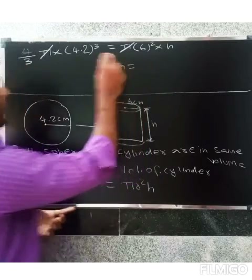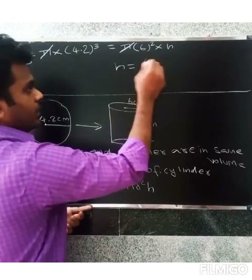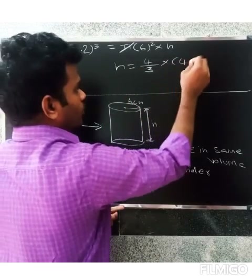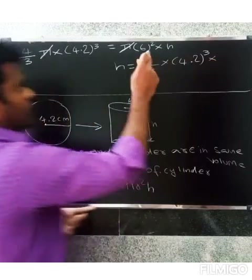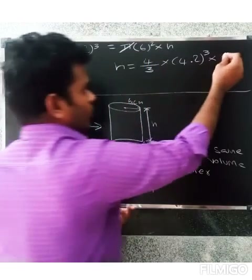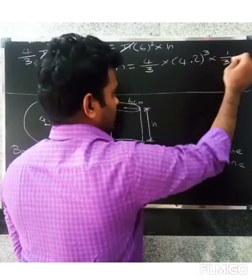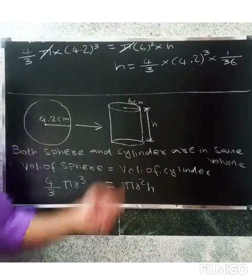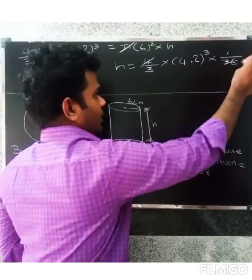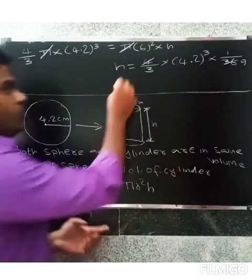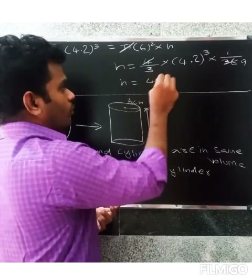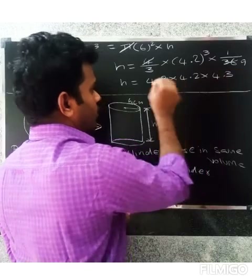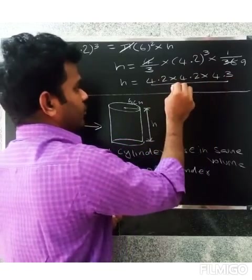Canceling π from both sides: h equals 4/3 into (4.2)³ divided by (6)², which simplifies — 6² equals 36, and 4/3 times 1/36 gives 1/27 — so h equals (4.2)³ divided by 27, which is 4.2 × 4.2 × 4.2 divided by 3 × 9.